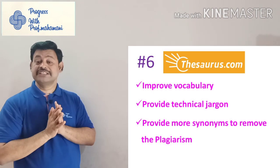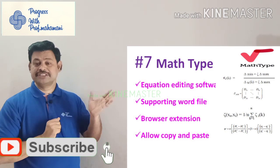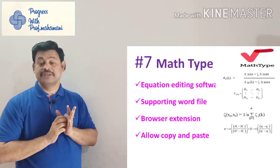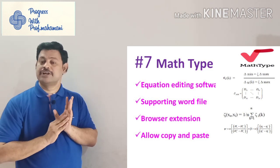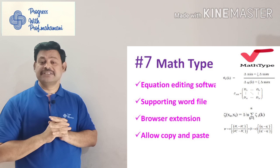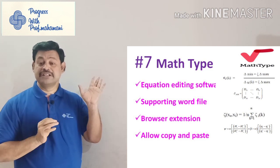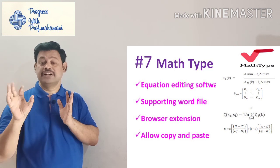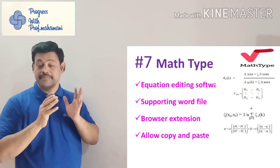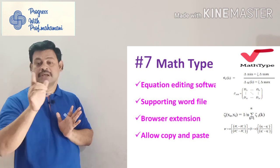The seventh one is MathType, which I have already covered in a separate video. This is equation editing software supported within Word. You install it and it appears inside Word. It is user-friendly — you type your equation in the MathType window, then copy and paste it into Microsoft Word. This is a very user-friendly tool for editing equations in your research documents.